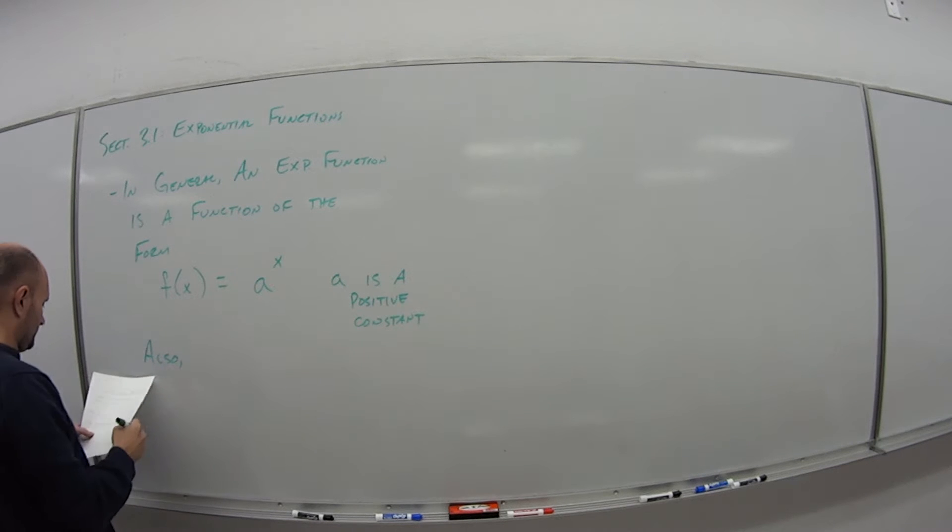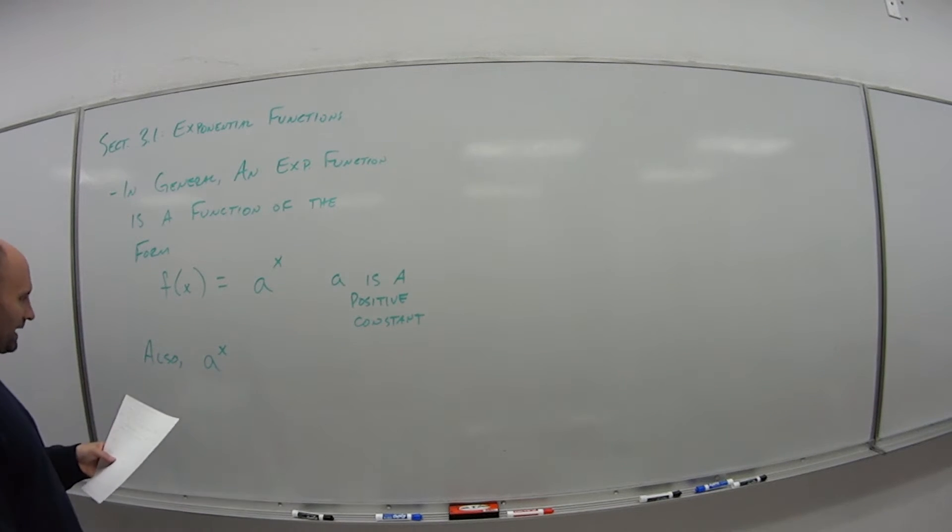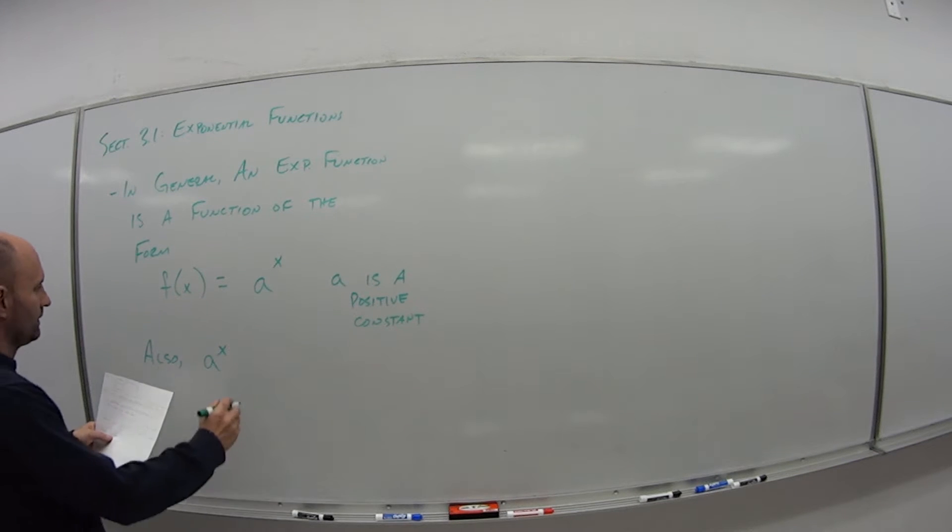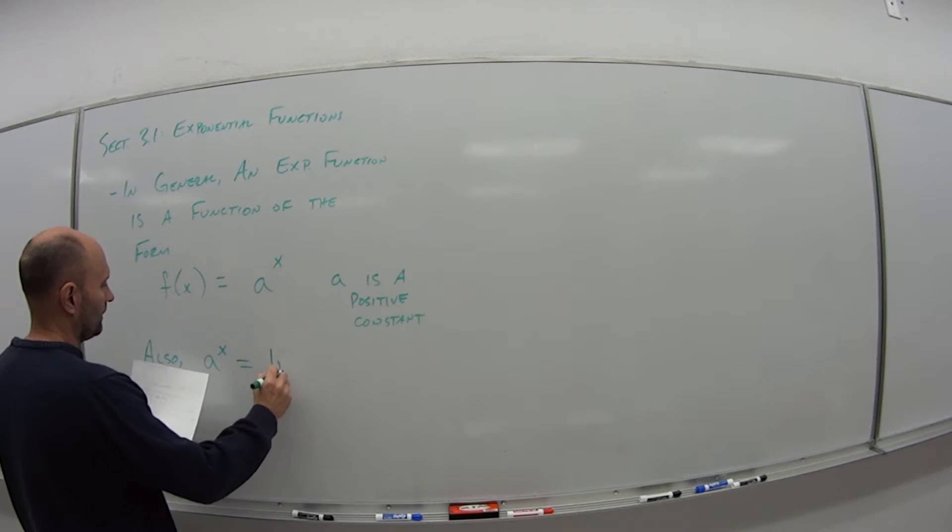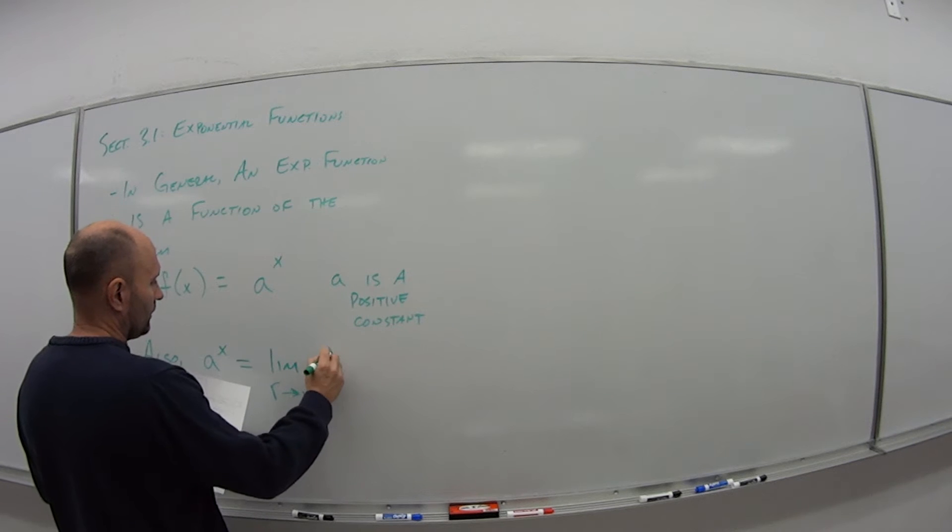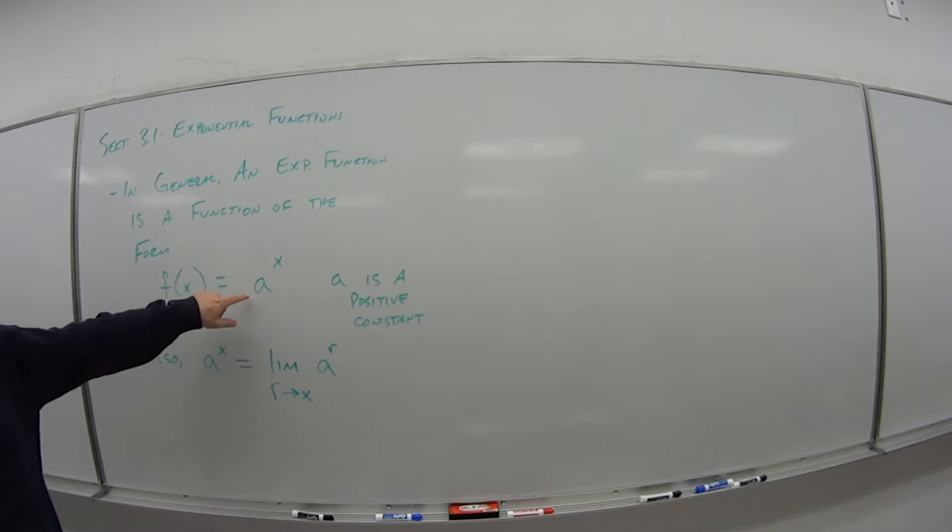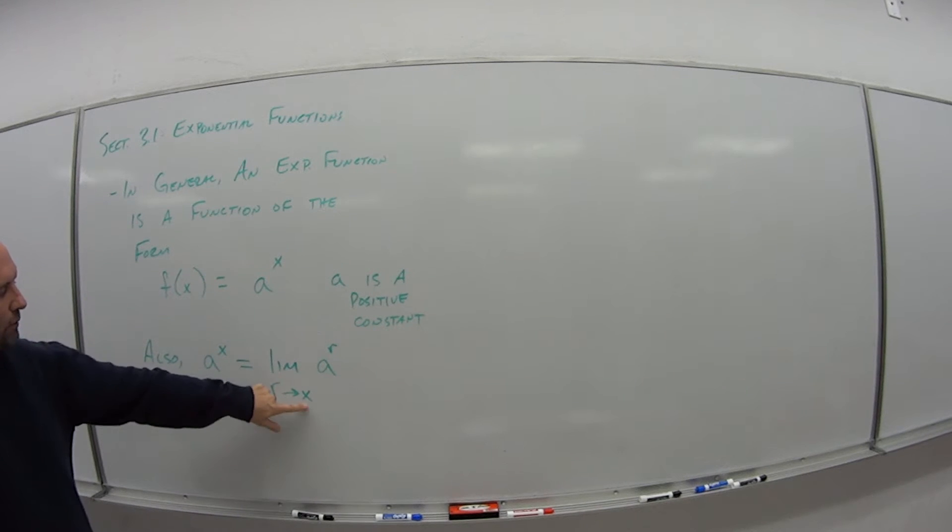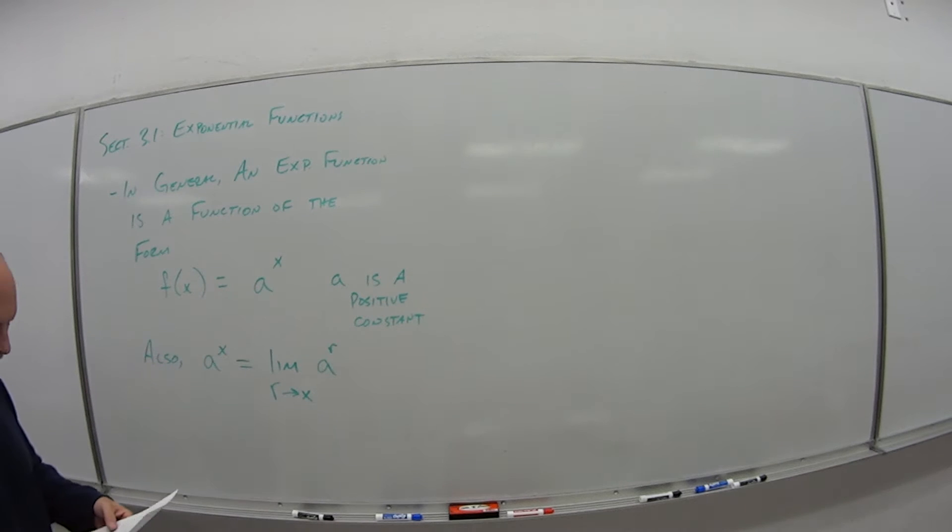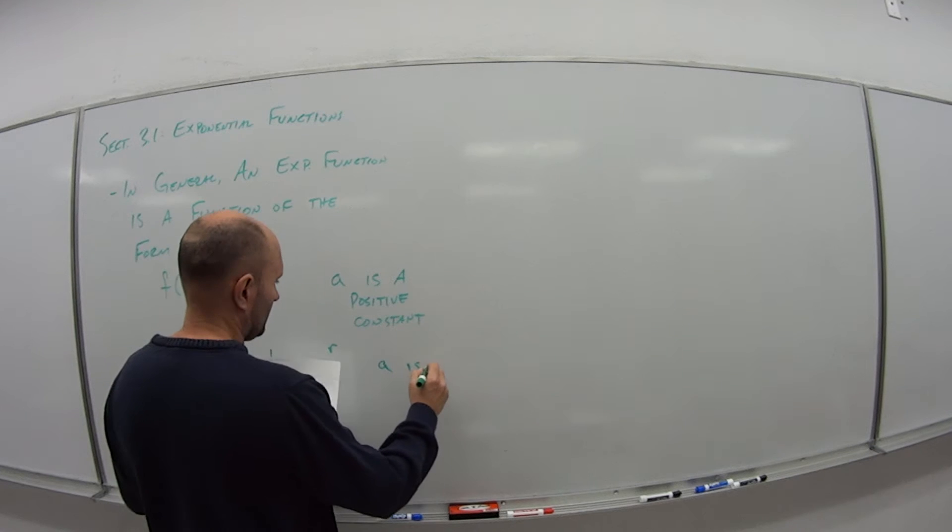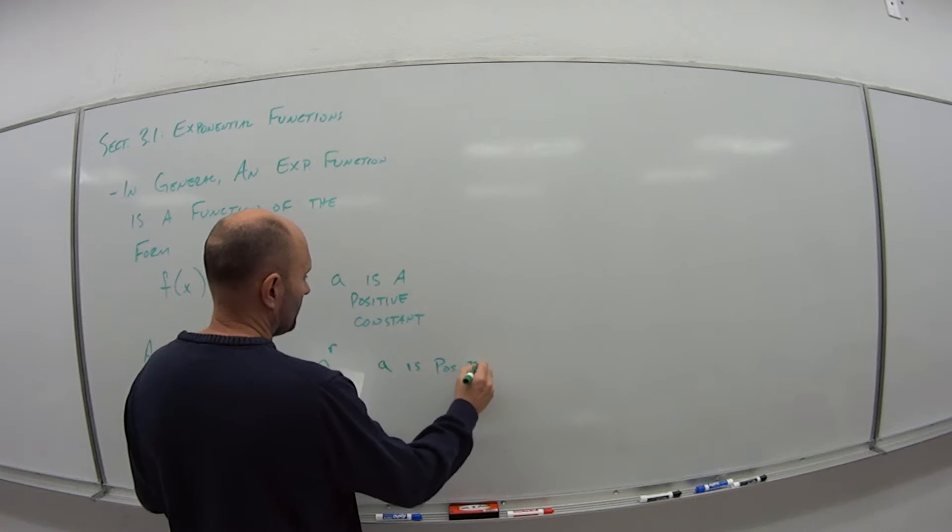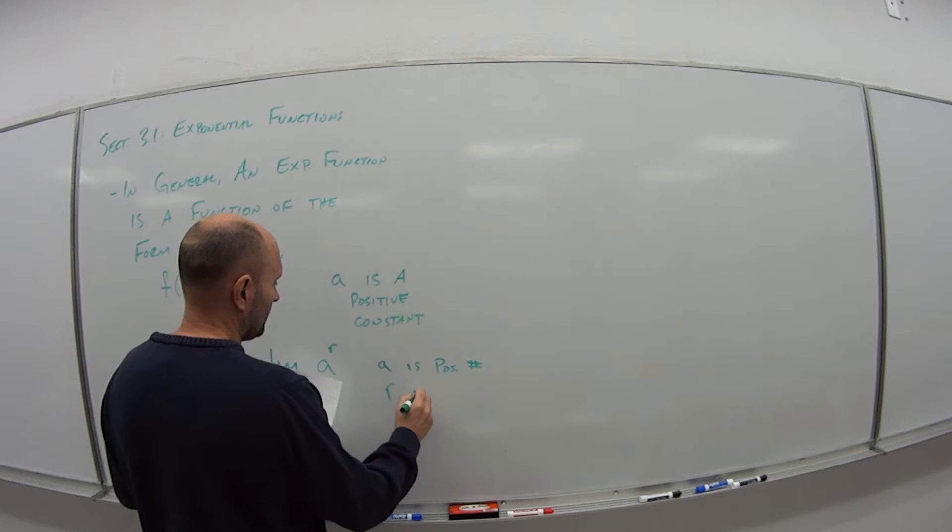Also, when we have a to the x, this is equal to the limit as r approaches x of a to the r power. So if I have this a to the x, what I'm really saying is that as some value r approaches x, it gets me to this function. And again, a is a positive constant, actually a positive number.